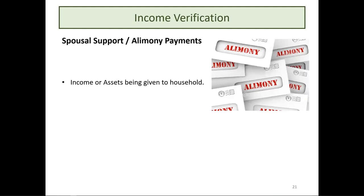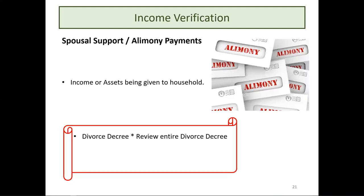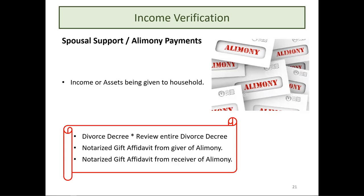For spousal support and alimony payments — income or assets being given to the household — review the entire divorce decree as part of the certification. A notarized gift affidavit from the individual giving the alimony is sufficient, or you can obtain a notarized gift affidavit from the resident who is receiving the alimony payment.